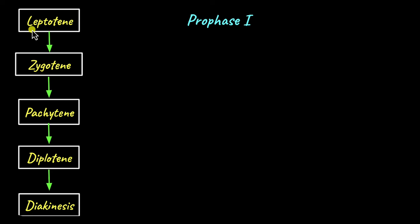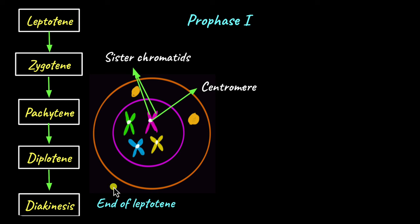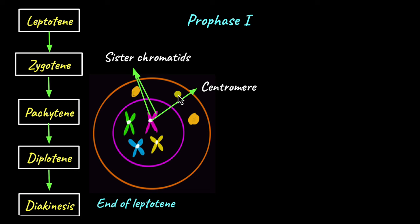What happens as leptotene begins is that the chromatin begins to condense to form chromosomes. So by the end of leptotene, chromatin has fully condensed to form chromosomes and each chromosome is made up of two sister chromatids. Remember, because DNA has replicated, each chromosome contains two sister chromatids attached at the centromere. The centrosomes, which were initially close to each other in the cell, begin their journey towards opposite poles of the cell.